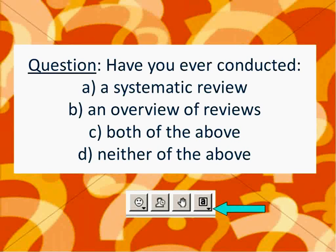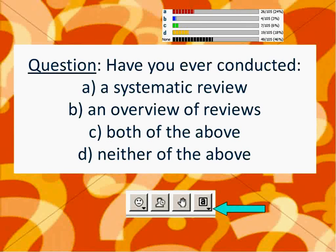Before I start, I have a question for the audience, just so I have a better sense of who we're speaking to. Have you ever conducted: A, a systematic review; B, an overview of reviews; C, both of the above; and D, neither of the above? My poll shows that a lot of you have done a systematic review in the past, and a fair amount have done either a systematic review or an overview of reviews. Only 3% have actually done an overview of reviews. Thank you very much for participating in that.